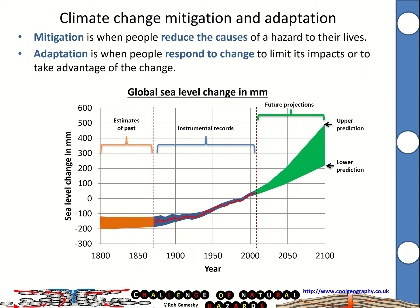Hello and welcome to this GCSE explainer on climate change mitigation and adaptation. We've already covered climate change in a previous video. This is all about mitigation, which is when people reduce the causes of a hazard to their lives — so can we reduce the causes of climate change? The alternative is adaptation, when people respond to change to limit its impact or to take advantage of the change.